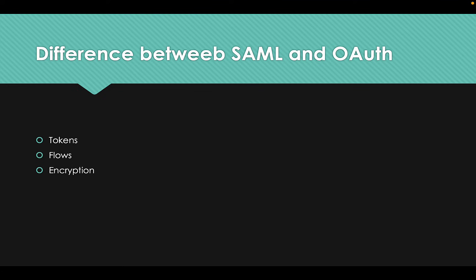SAML is designed for both authentication and authorization, while OAuth was only built for authorization. The difference lies in the token utilization. The envelope of credentials in which user data is stored is called a token. In SAML, the token is known as a SAML assertion; in OAuth, it is known as an access token — the jargon used is different.